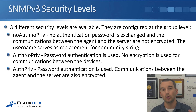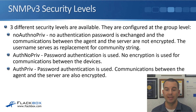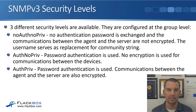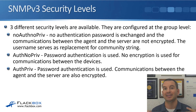The first security level is noauth/nopriv, which means no authentication and no privacy. With noauth/nopriv, no authentication password is exchanged and communications between the agent and the server are not encrypted. It still uses a username because it's SNMP version 3, but that username basically works the same as the community string in SNMP version 1 and 2. So there's not much point in doing that - it doesn't really give you any advantage over the older SNMP versions.